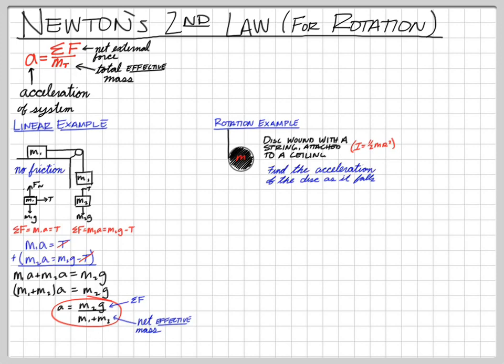For our big picture idea — acceleration equals net external force divided by total effective mass — the effective mass for this object is the regular mass plus the contribution from the moment of inertia. Drawing the free body diagram: weight Mg pulls straight down, tension pulls up. The acceleration is downward, so mass times acceleration equals the weight minus the tension.